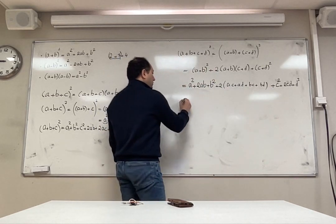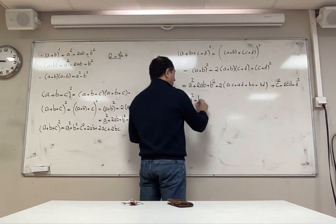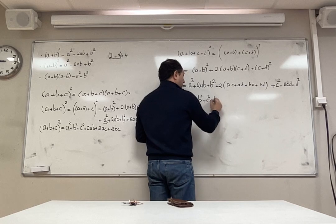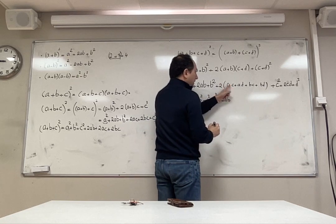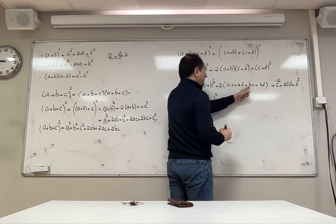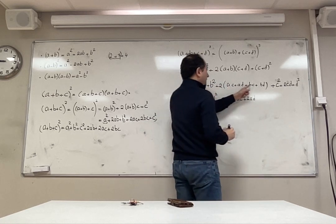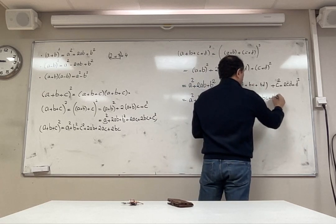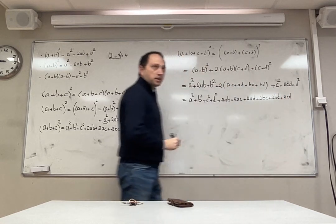Writing everything organized: a squared, b squared, c squared, d squared, then 2ab from the first bracket expansion, and from multiplying the middle term by 2: 2ac, 2ad, 2bc, 2bd. And the final term 2cd from expanding c plus d squared. That is the complete answer for a plus b plus c plus d squared.